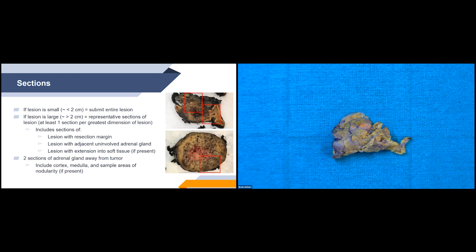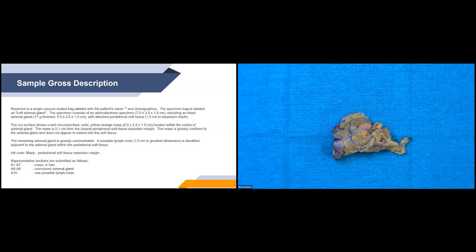Here is a sample gross description for an adrenal cortical adenoma. The first paragraph states the specimen — intact adrenal gland with weight trimmed and attached periadrenal soft tissue. The second paragraph covers main findings: the cut surface shows a well-circumscribed solid yellow-orange mass located within the cortex, with measurement to the soft tissue resection margin and confirmation that the mass was confined to the adrenal gland. The third paragraph covers additional findings including the background adrenal gland and a possible lymph node. Because the mass was small (largest measurement 2.3 cm), it was submitted entirely, along with two sections of uninvolved adrenal gland and the possible lymph node.